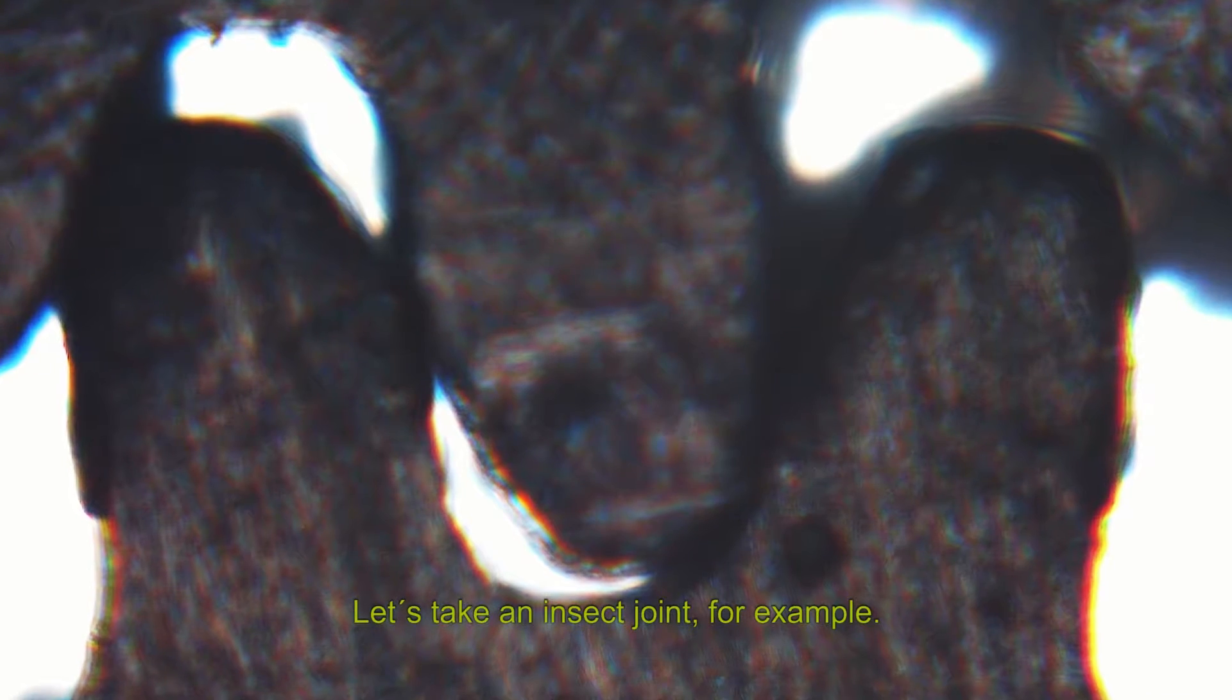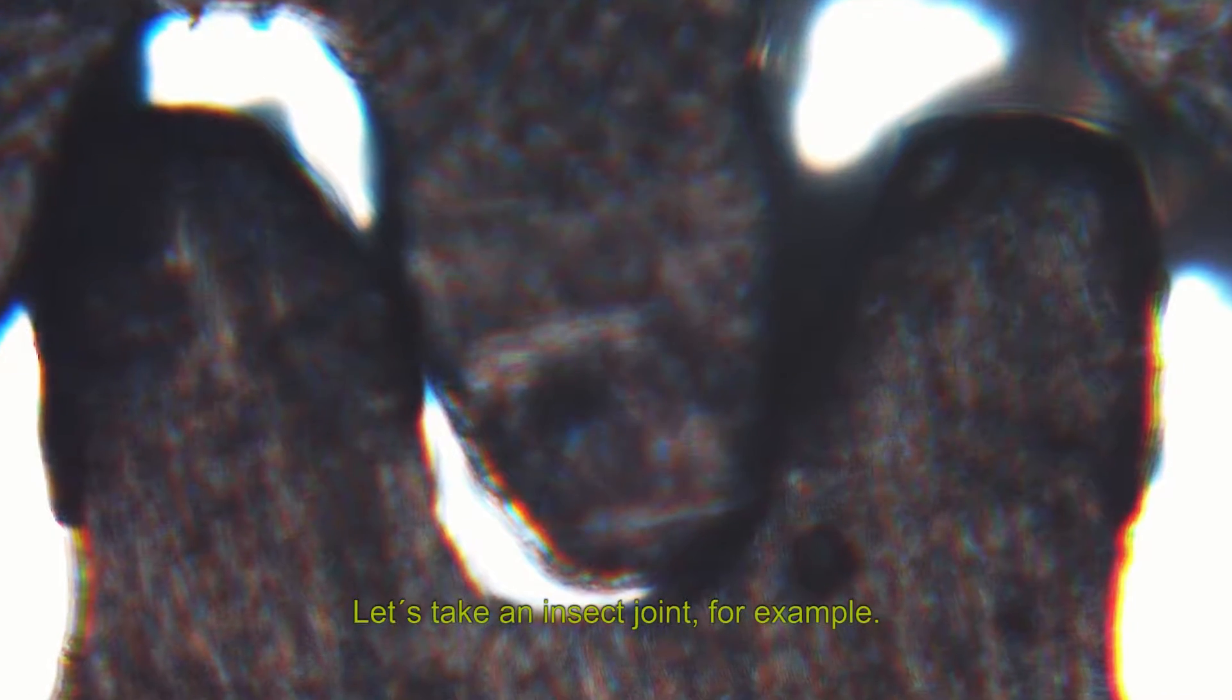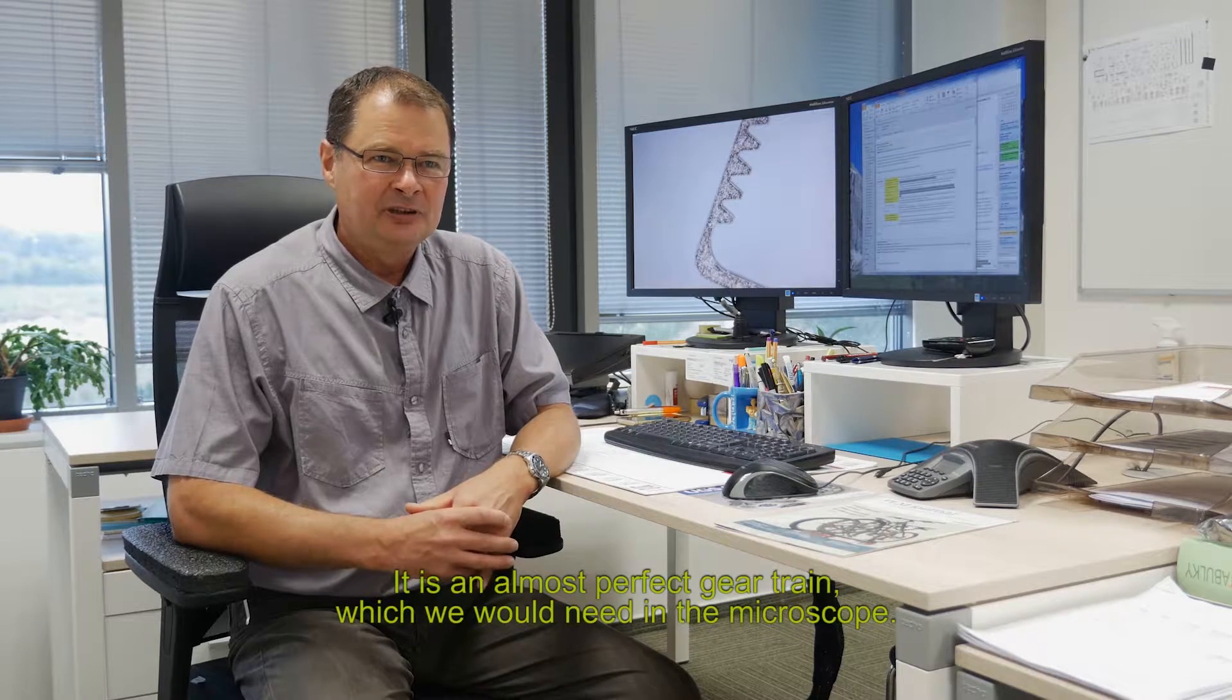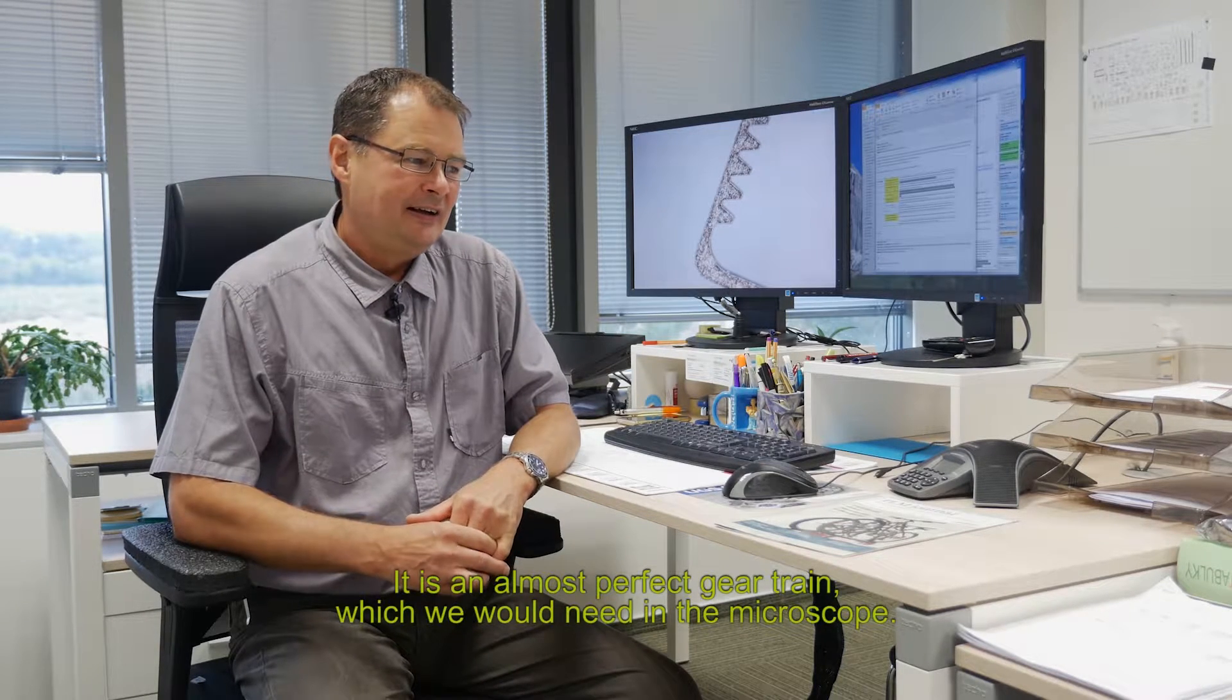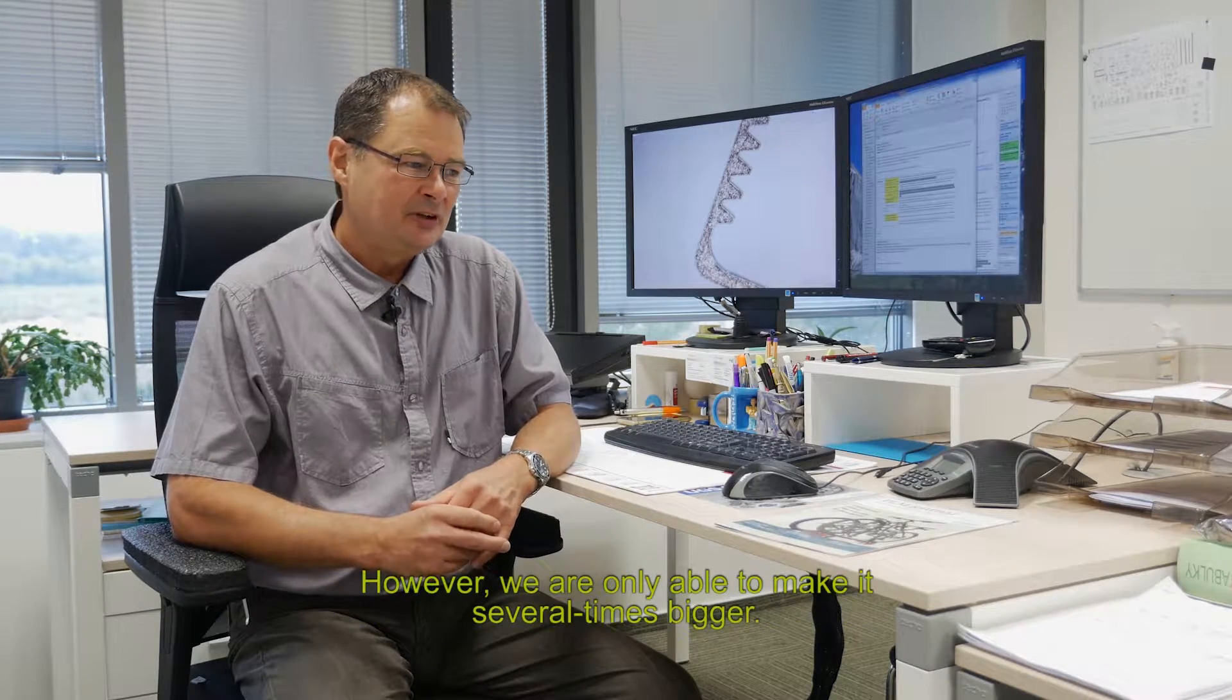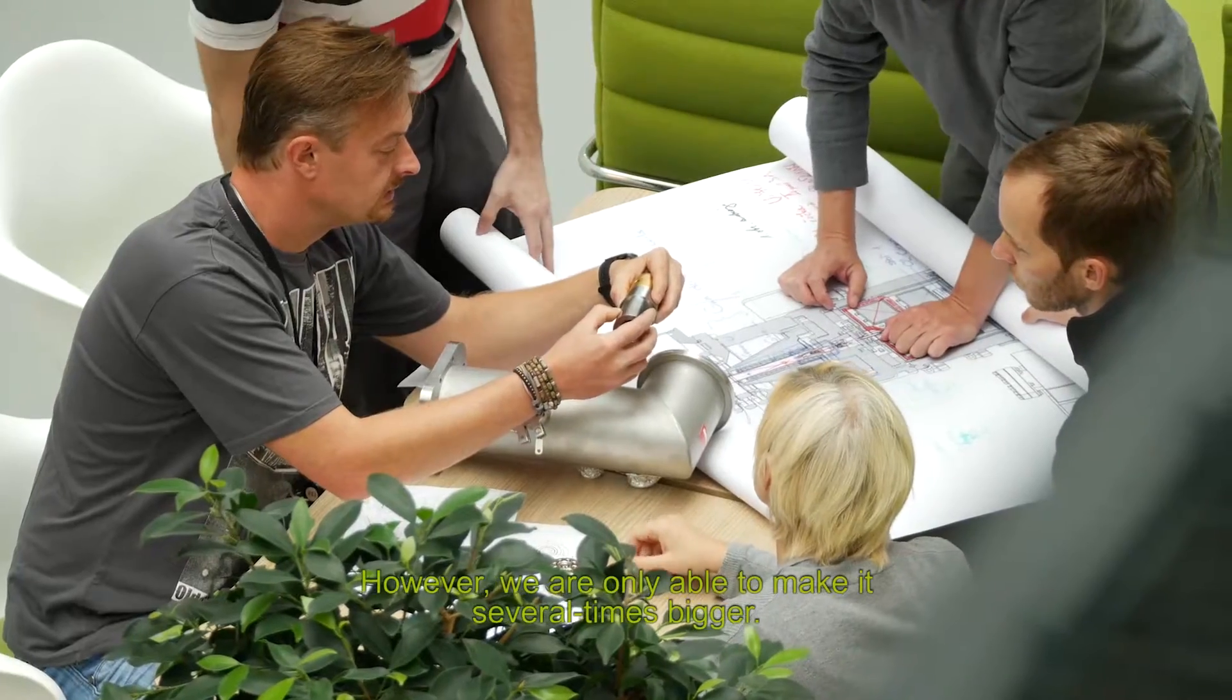As an example, we can take an insect joint, which has exactly the perfection we would need for our microscope, but we can only make it with less precision.